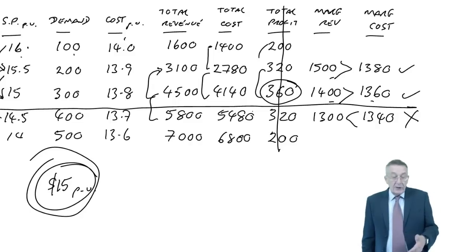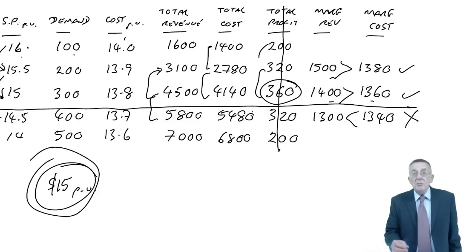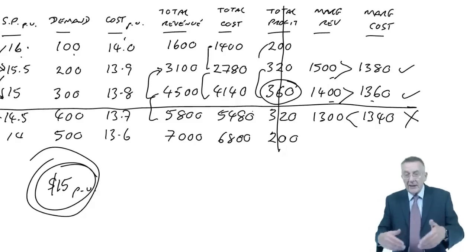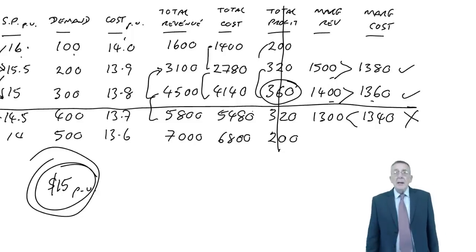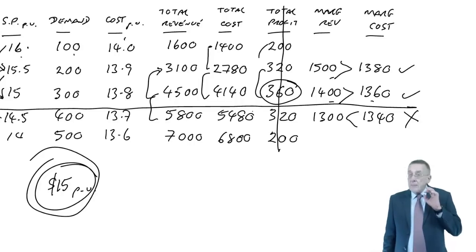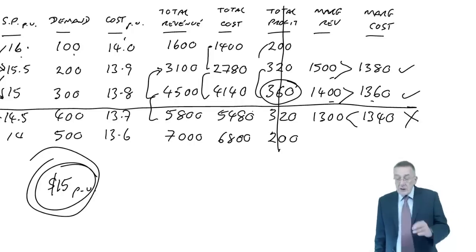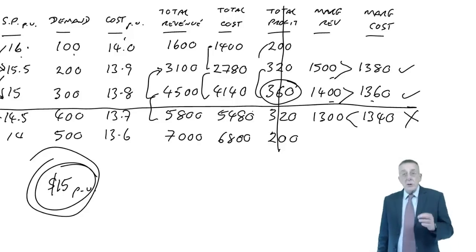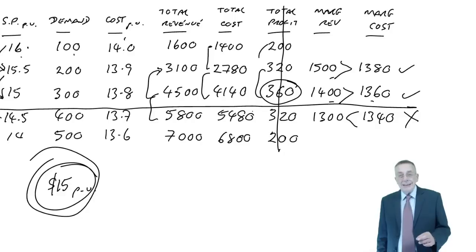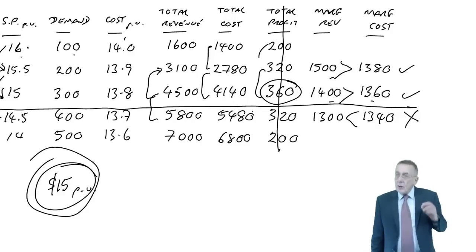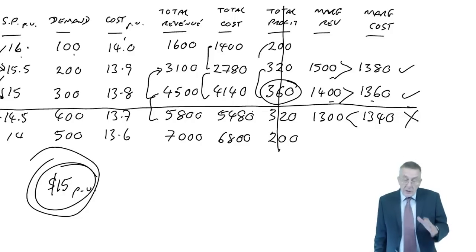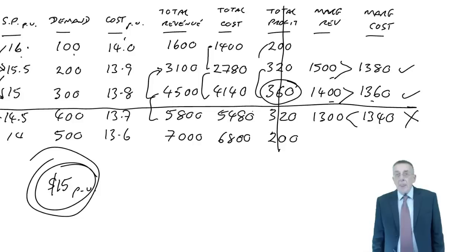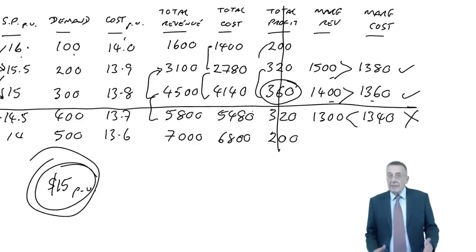It may have occurred to some of you that in the previous question, because everything's nice and smooth - every 50 cents, demand goes up by 100 - we can use equations. But be careful: if the question gives you a table, then you do it as a table. If they want you to use equations, which is in fact more likely, you'll see in a minute how it will be given - there will be no argument.